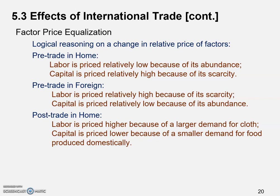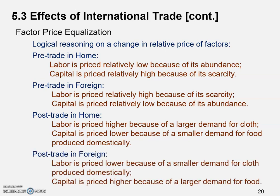In Home, capital is priced lower than before trade, because of the smaller demand for food produced domestically. Home would import more food from Foreign because it's cheaper, so the smaller demand for food means the food industry shrinks, and capital faces a lower demand, leading to a lower relative price.